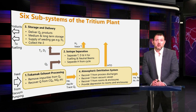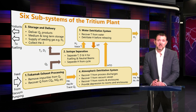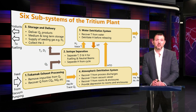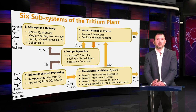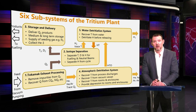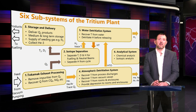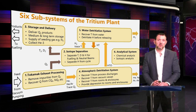The tritium is recovered as water and sent to the Water Detritiation System, which strips protium from tritium. The tritium is recovered and sent to the Isotope Separation System, and the protium is removed from the plant. To support all five of these subsystems, we have an analytical system that provides both chemical and isotopic analysis to ensure the system works as expected and to provide inventory management.